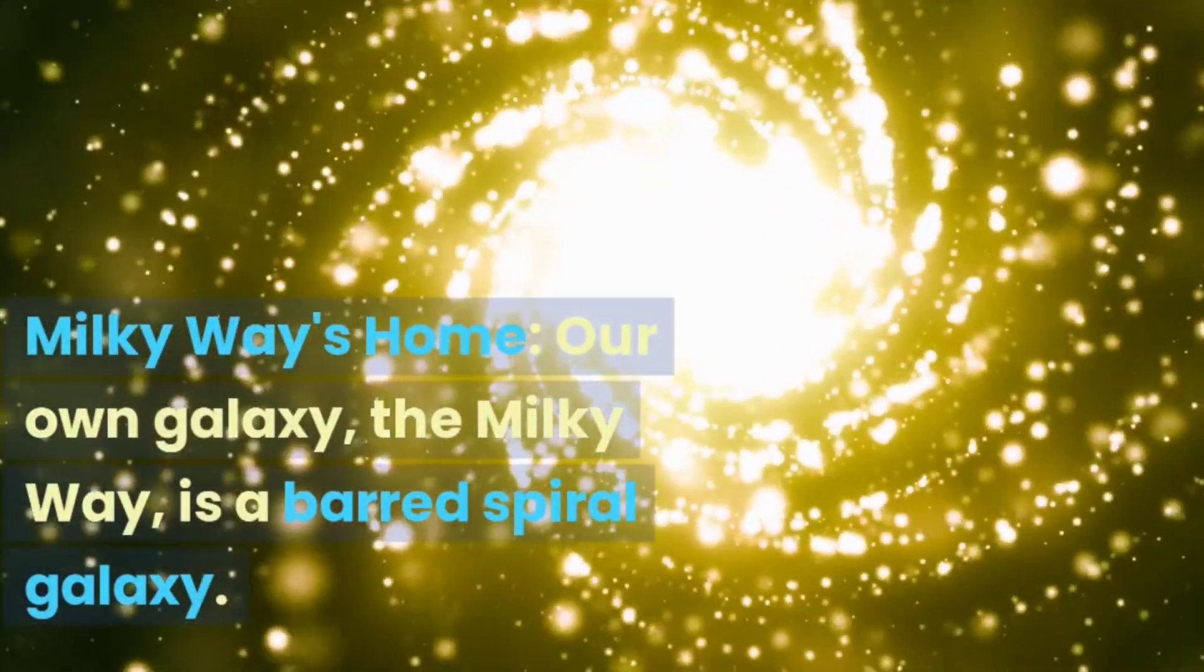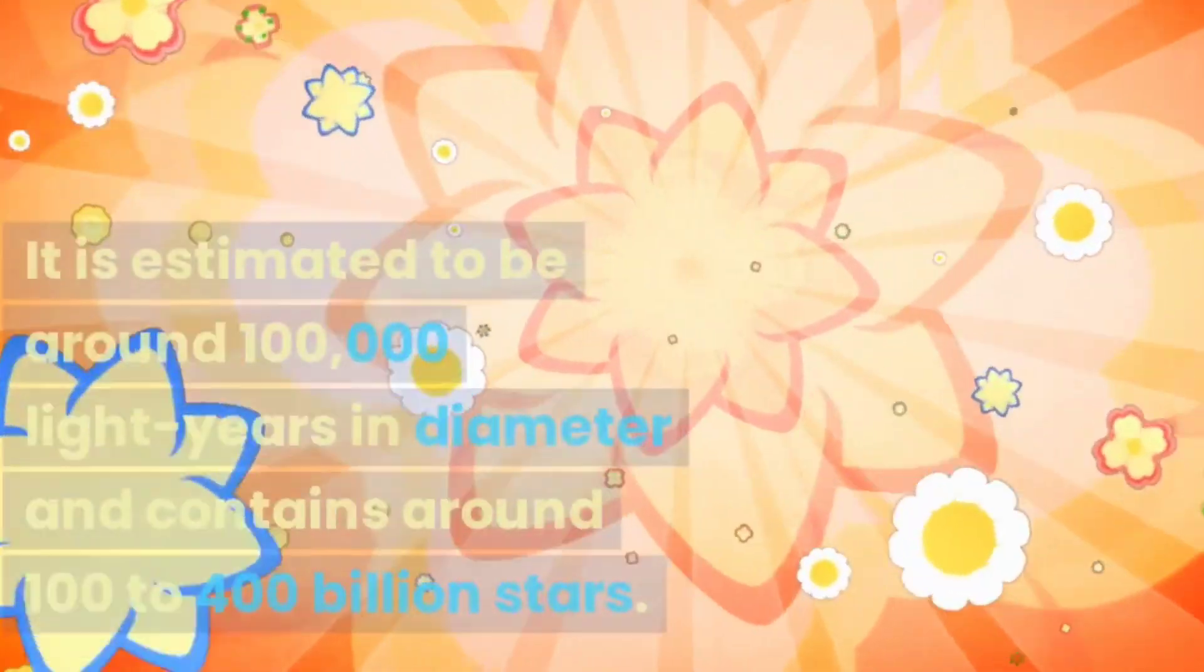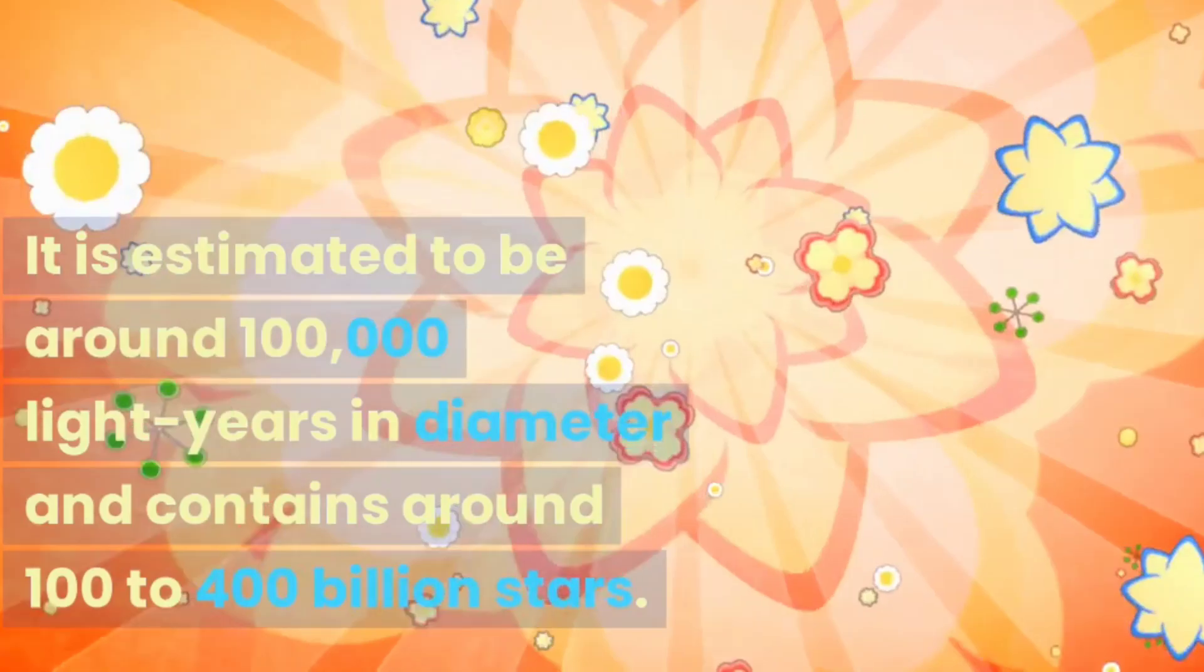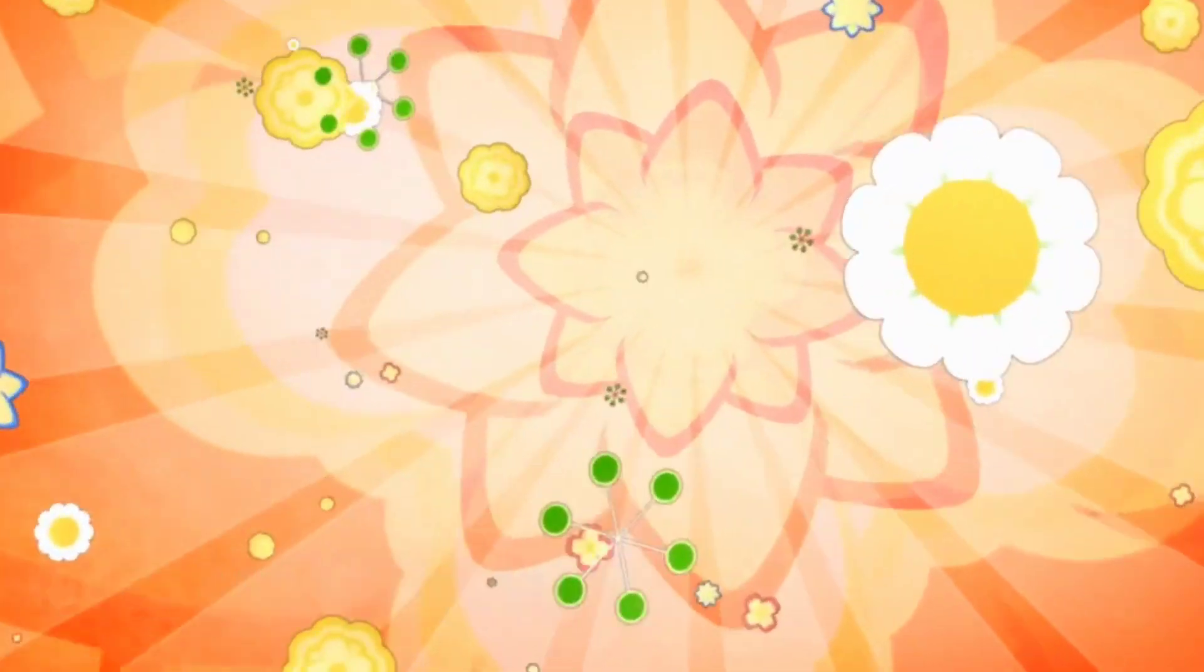Milky Way's home - our own galaxy, the Milky Way, is a barred spiral galaxy. It is estimated to be around 100,000 light-years in diameter and contains around 100 to 400 billion stars.